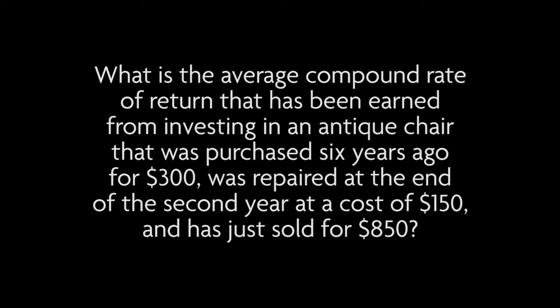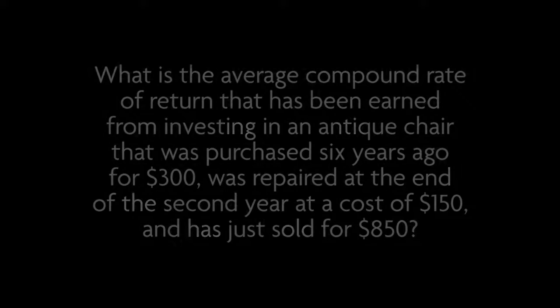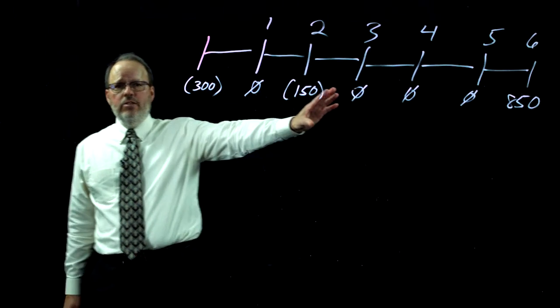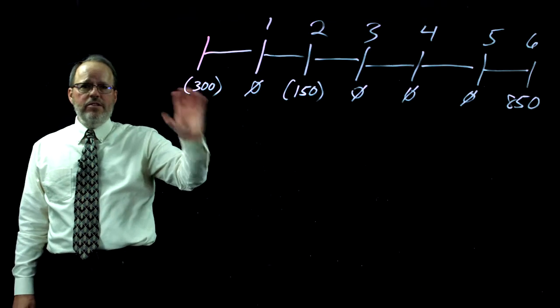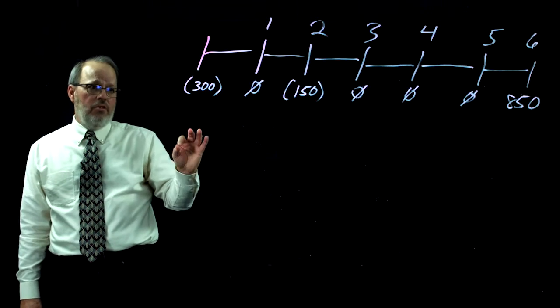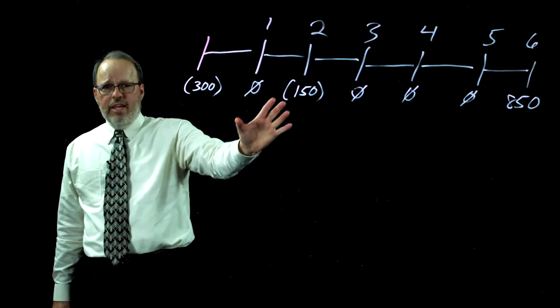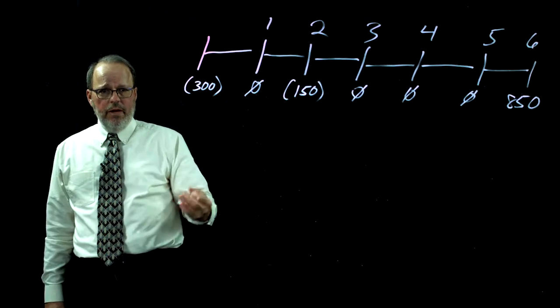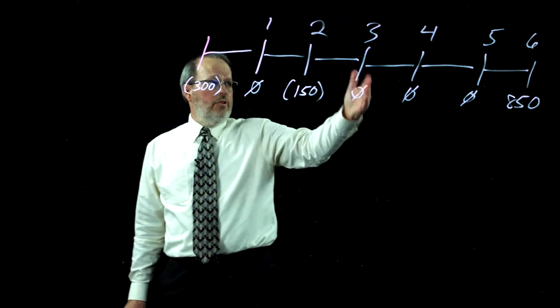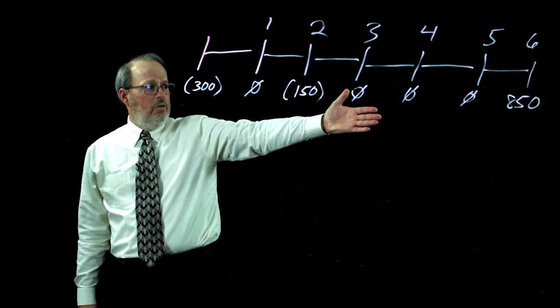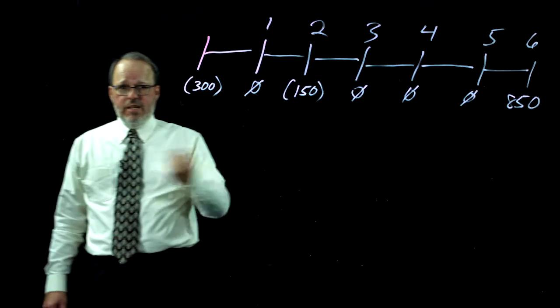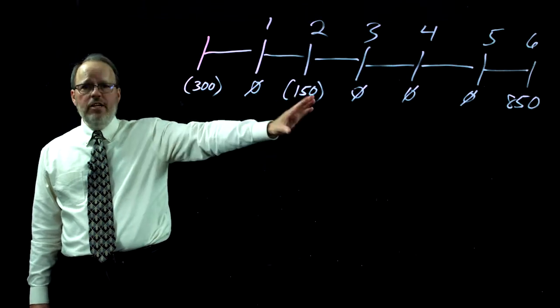Let's take a look at an uneven cash flow scenario. What is the average compound rate of return earned from investing in an antique chair purchased six years ago for $300, repaired at the end of the second year at a cost of $150, and then sold for $850? I've drawn a timeline to depict this. We purchased the chair for $300 — money leaving our hands, so that's negative. At the end of year one nothing happens, but at year two we spent $150 repairing the chair, also negative. Years three through five nothing happens, and at the end of year six we sell for $850, which is positive.